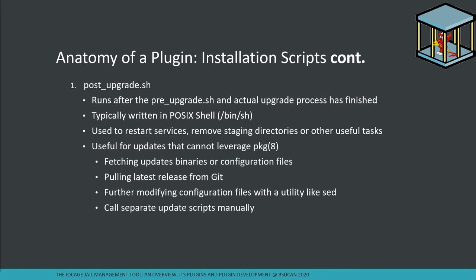The pre-upgrade.sh script runs before the upgrade happens. Upgrading a jail updates it to the latest patch level like freebsd-update fetch, then runs pkg upgrade to update installed packages. Pre-upgrade.sh is useful for stopping services, staging files, moving files around, and rotating log files. The post-upgrade.sh runs after pre-upgrade.sh and the actual upgrade process finish. It's used to restart services, remove staging directories, update things not installed via pkg — like grabbing a new binary from a website or a new release from Git — and running an application's own update scripts if they aren't called automatically.